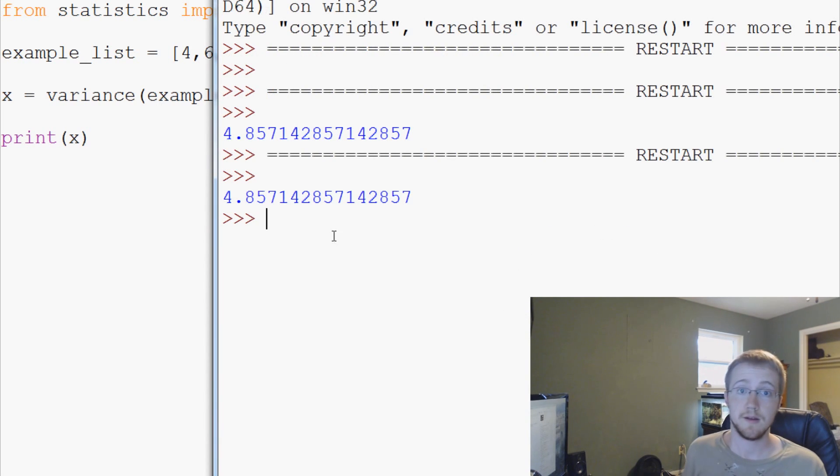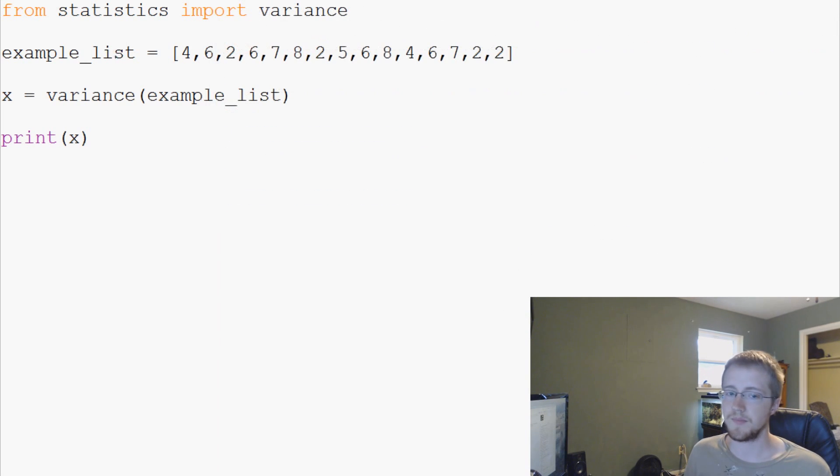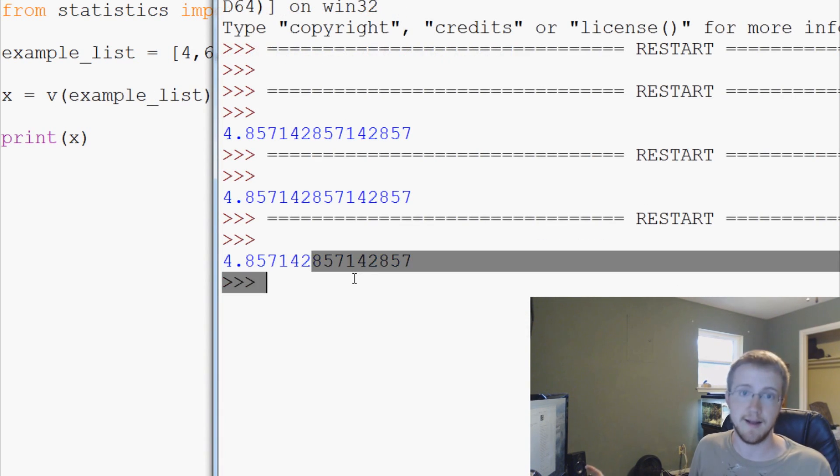And now you don't even need an s dot. Now you could reference it straight as variance like that. So you can do that. So now the next thing that we can do, of course, is from statistics import variance. If you don't want to type variance, you could say import variance as v. So now instead of variance we can just say x equals v example list, run that, and again that still works.